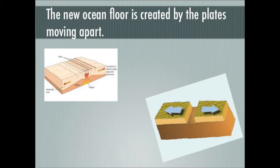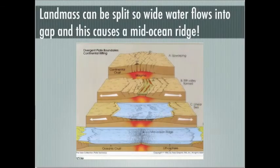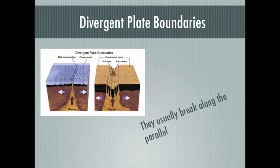Divergent plate boundaries typically break along parallel faults that slightly tilt outward from one another. As the plates separate along the boundary, the block between the faults cracks and drops down into the soft, plastic interior. This interior is also known as the asthenosphere. The sinking of the block forms a central valley called a rift.